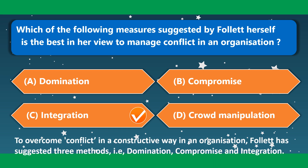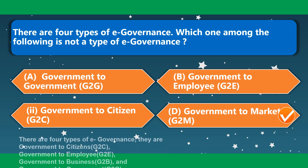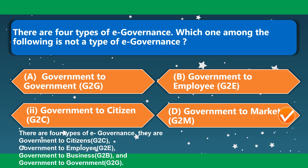Which measure suggested by Mary Parker Follett is the best in her view to manage conflict in an organization? This is integration — option C is the correct option. To overcome conflict constructively, Follett suggested three methods: domination, compromise, and integration. There are four types of e-governance. Which one is not a type? Government to Market (G to M) is not a type. The four actual types are: government to citizens, government to employee, government to business, and government to government.